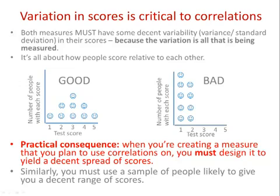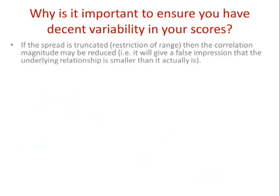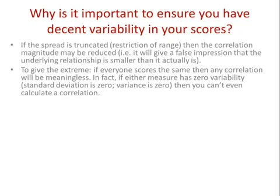In addition to designing your instrument to give a good spread of scores, when you actually test it out on a sample of people you also need to make sure those people are likely to give you a decent range of scores. If the spread is truncated in any way — what we call a restriction of range — this means the correlation magnitude may be reduced. It might give you a false impression that the validity of the test is less than it actually is. In the extreme, if everyone scores exactly the same on any measure, the correlation will literally be meaningless.